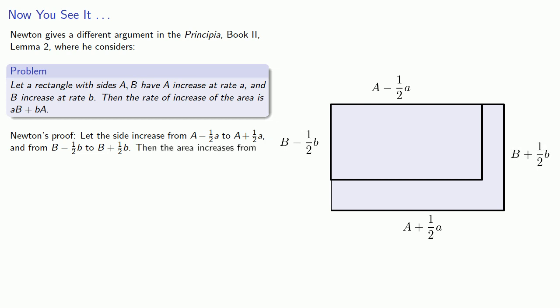So our area is going to increase from a minus a half a times b minus a half b, where it started, to a plus a half a times b plus a half b, where it ended.